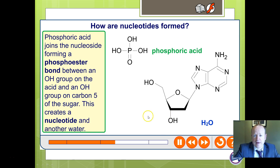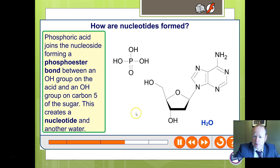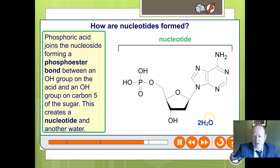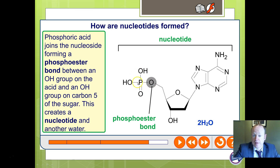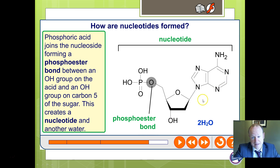Then the phosphoric acid — the phosphate group — joins on. Again, you've got a hydroxyl group, the OH and the hydrogen joining to make water. You get a phosphoester bond forming between the OH group and carbon 5. Remember, carbon 5 was not on the ring, it's on the edge. This is now a nucleotide — it has a base, a pentose sugar, and a phosphate group.